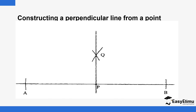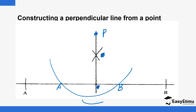So constructing a perpendicular line from a point — the point is up here. You draw an arc that way, and the arc crosses the line at point A and point B. Then using A as the center, you make an arc down here; B as the center, you make another arc to cut that. You call this point Q, then you join the point from above to Q. That is basically how we are able to construct a perpendicular line from a given point to a given line.